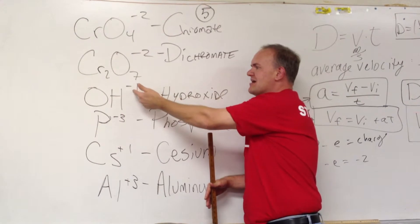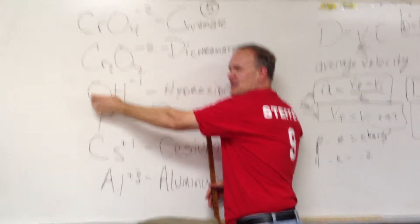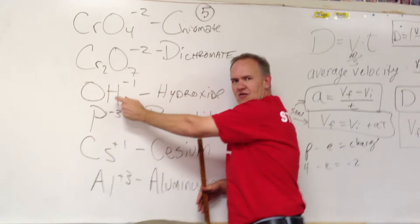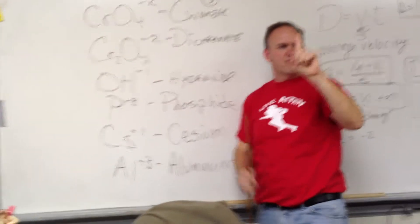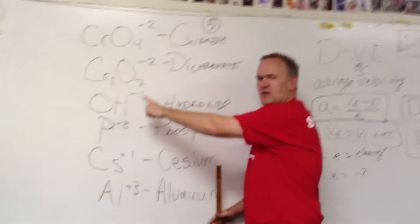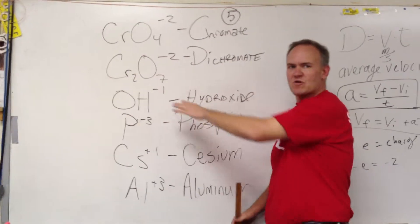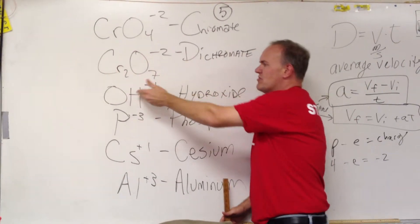Hydroxide, though, is negative one. Why? Because you have a negative two on the oxide and hydrogen is plus one. What's negative two plus one? It's negative one. So that's where that comes from.